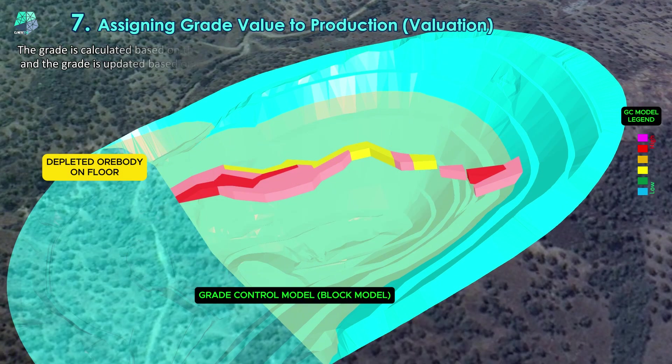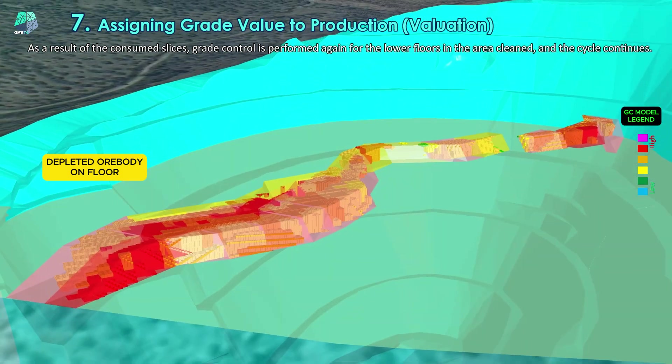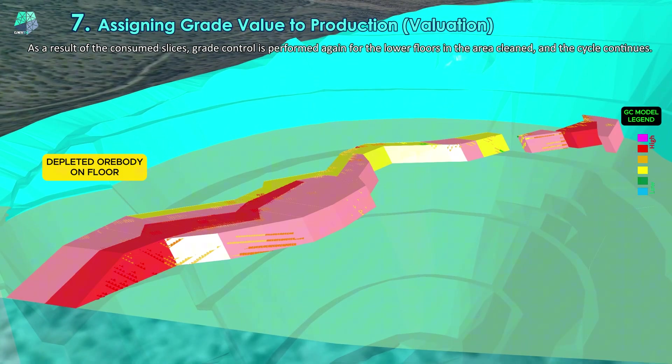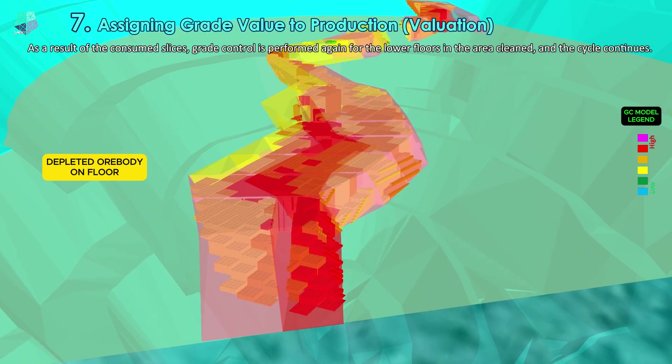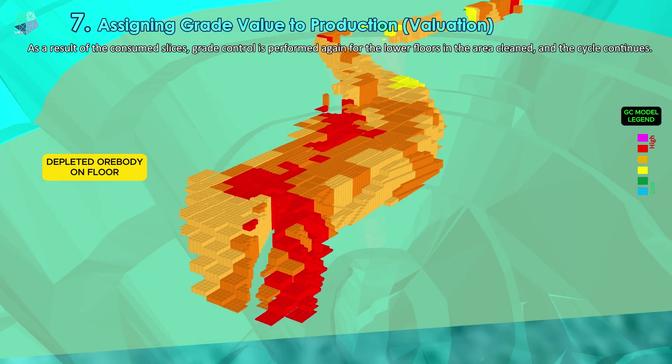As a result of consumed slices, grade control is performed again for the lower floors in the area cleaned, and the cycle continues.